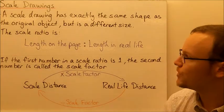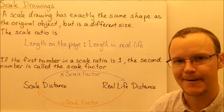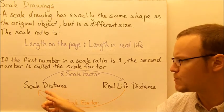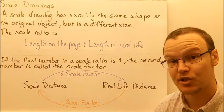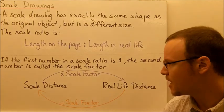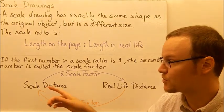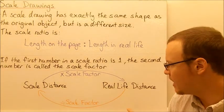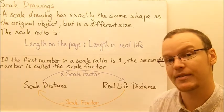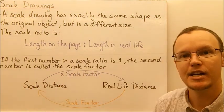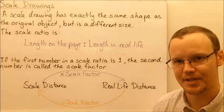If the first number in a scale ratio is 1, then the second number is called the scale factor, and it's really easy to work with. To convert a distance on a scale model or scale drawing to a real-life distance, you simply multiply by the scale factor. Likewise, to find what the scale distance should be, you divide by the scale factor. So when creating a scale drawing, you make real-life measurements and divide by the scale factor to find the scale distance.